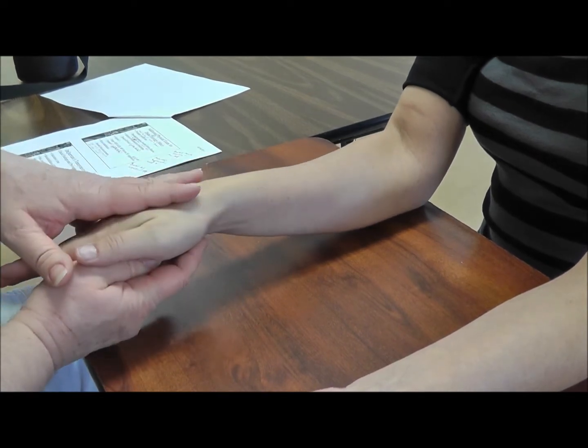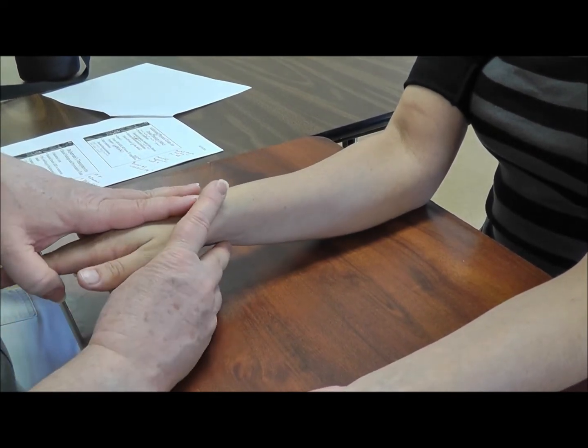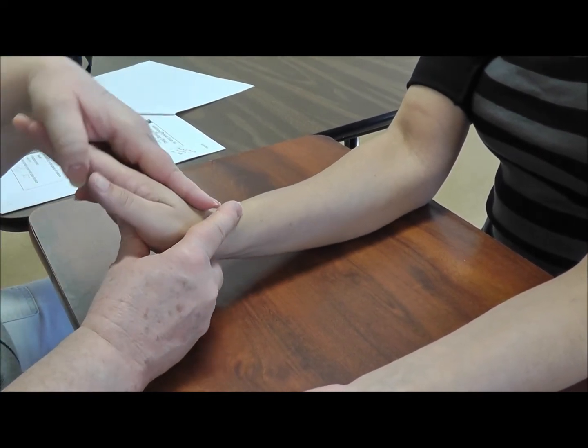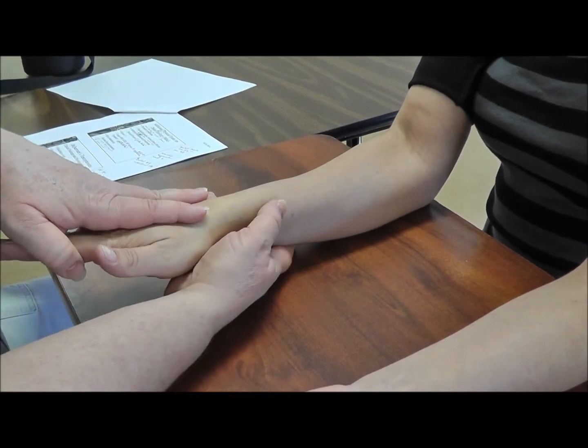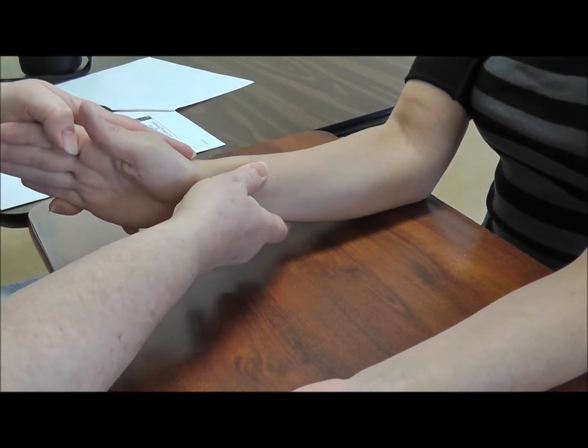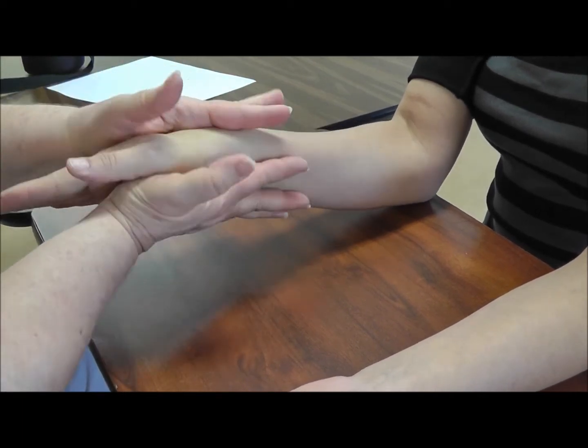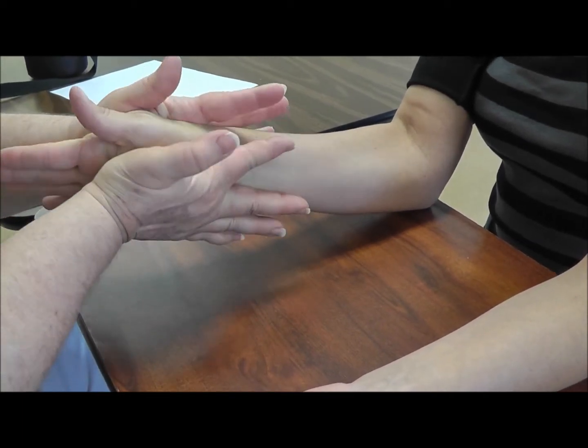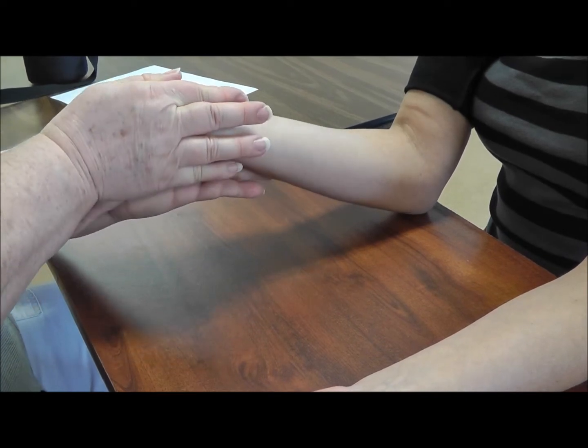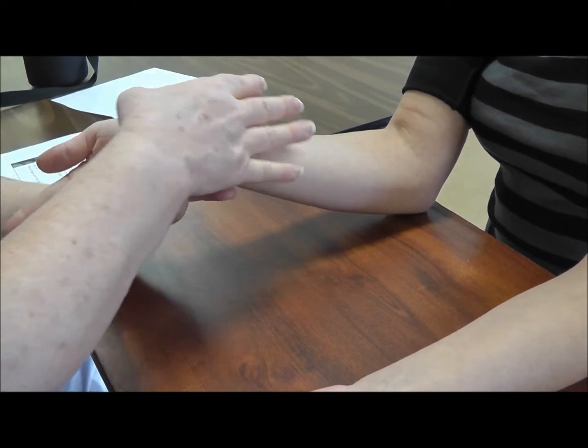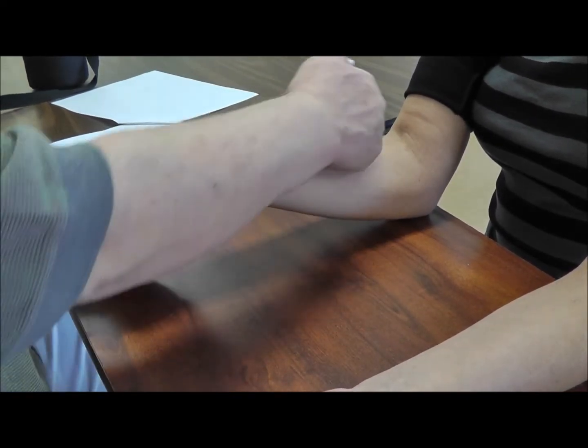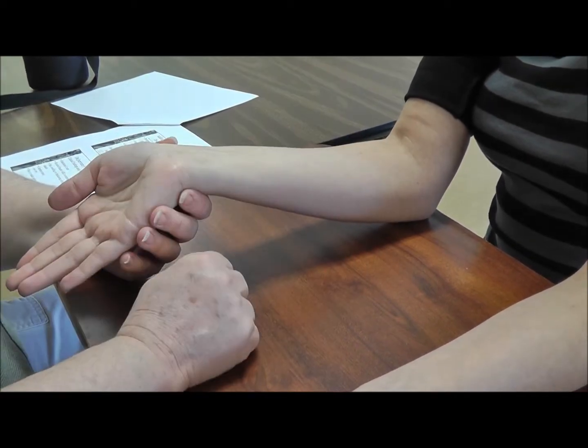Okay. And then you can do the same thing, resistance into supination combined with wrist extension. So as they go over, they're going to go over and extend at the wrist at the same time. Okay. Okay. So that would be for more proximal radial nerve involvement, and you would be looking for discomfort in this area.